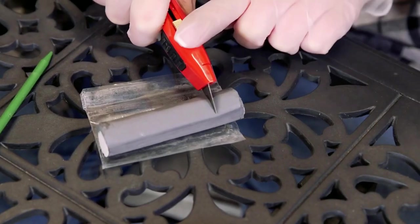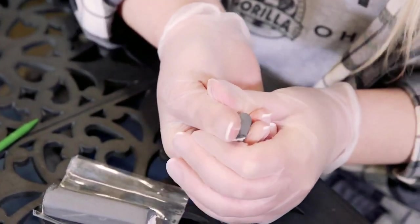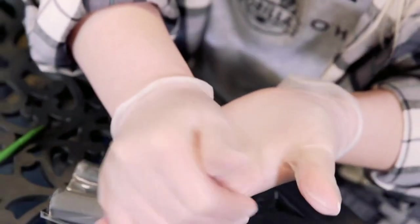Next, cut off the desired amount of the putty. Then mix by kneading the putty into a uniform color. This will take approximately 30 to 60 seconds. Putty will not harden completely if not mixed thoroughly.